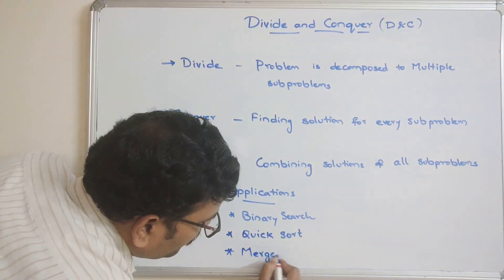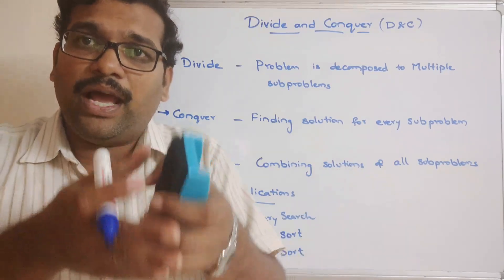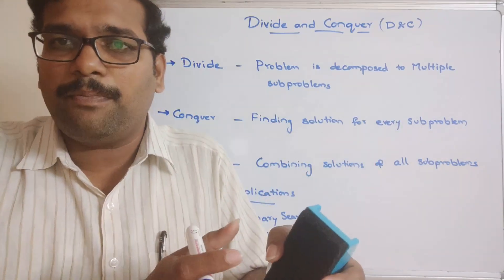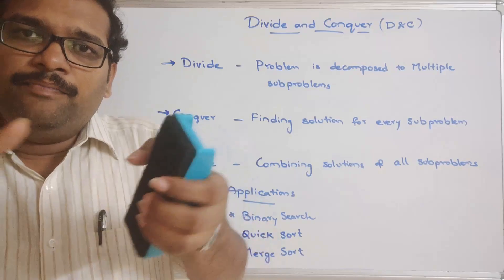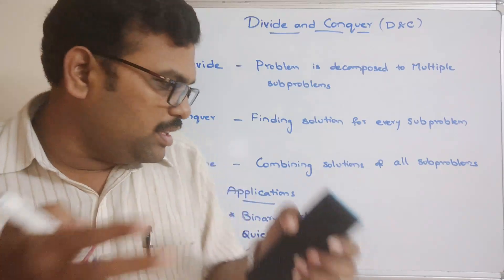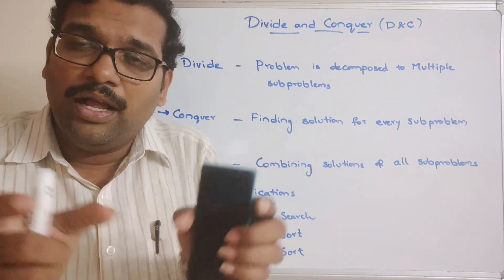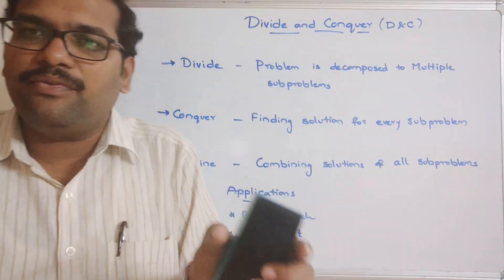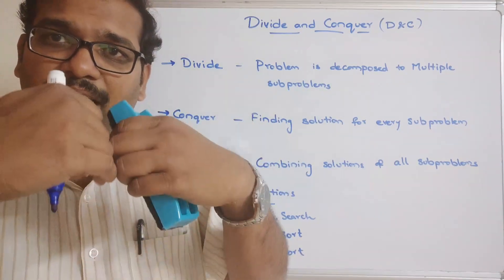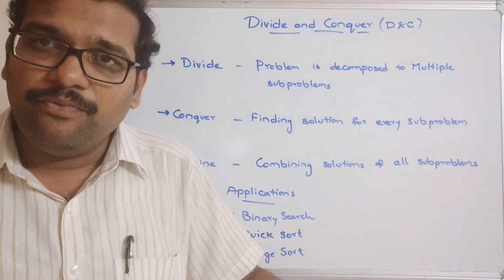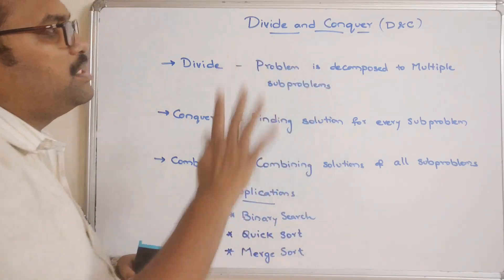Next is merge sort, also a sorting technique. Here, the complete array is divided into two halves, and each sub-array is further divided until it reaches two elements. Then the process goes bottom to top — for every sub-array, we compare and arrange elements in sorted order, merge two arrays, apply sorting, and combine both arrays. Merge sort also follows divide and conquer.